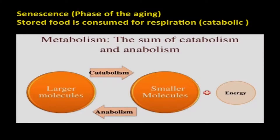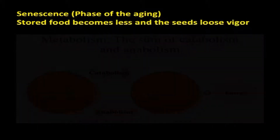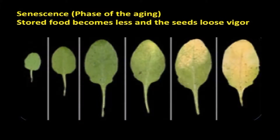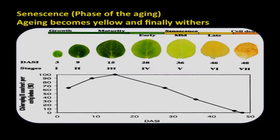The major characteristic of seed senescence is that metabolic processes are mostly catabolic and eventually become irreversible, terminating in death. During seed formation, it is mostly anabolic — the formation and storing of food. But during senescence, it is mostly catabolic and stored food is consumed for respiration. As the stored food is used gradually, the seed loses vigor. Senescence is not confined only to a whole plant; it may be limited to a particular organ such as leaves, flowers, or cell organelles.